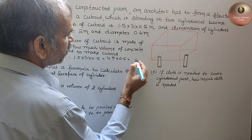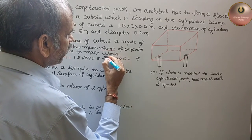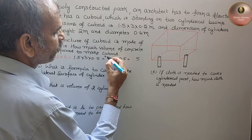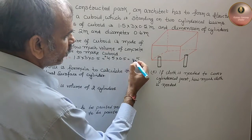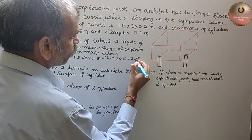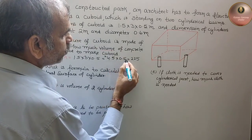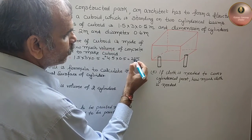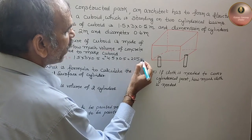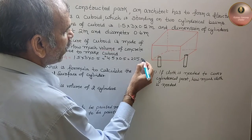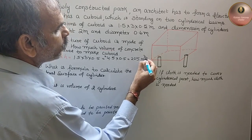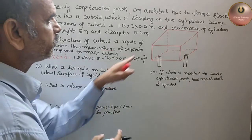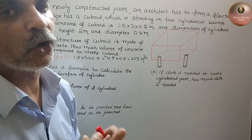Calculating: 4.5 × 0.5 — 5 fives are 25, carry 2; 5 fours are 20, plus 2 is 22, giving us 2.25 meter cube. So the volume of the cuboid is 2.25 meter cube — meter cube because volume is always in cubic units.